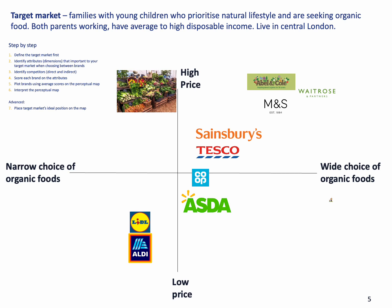Step four was to score each brand on the attributes. In this case we didn't do a precise mathematical scoring, but did it more based on intuition. But you can score each brand out of five or out of ten to see how well a particular brand is delivering — for example, the wider the choice they have, the further along the axis that supermarket would be. Step five: plot brands using average scores on the perceptual map, which we've now done.